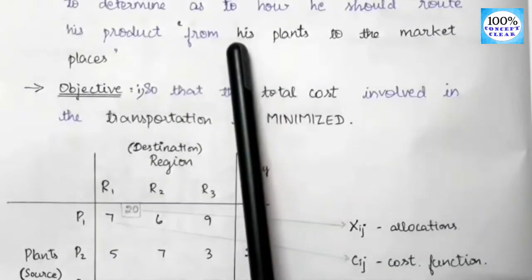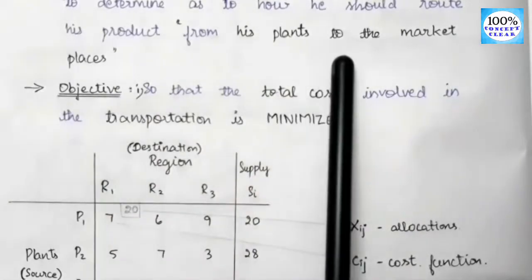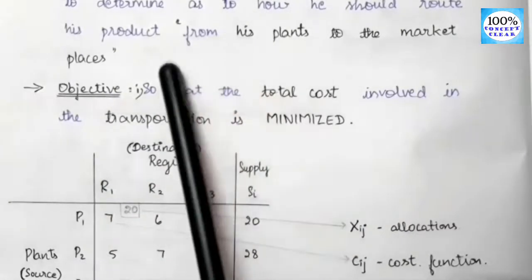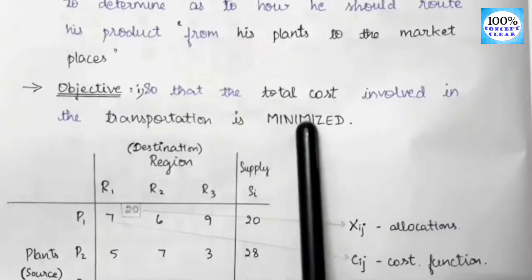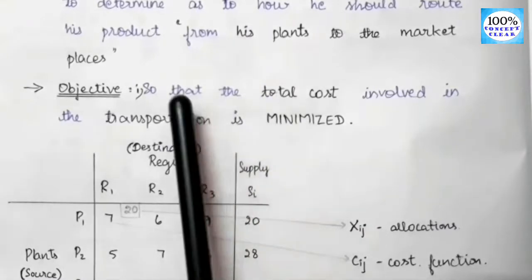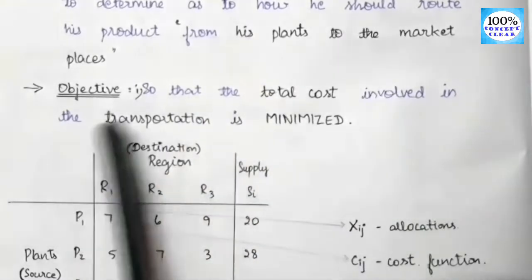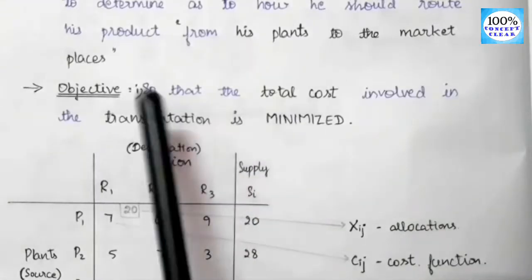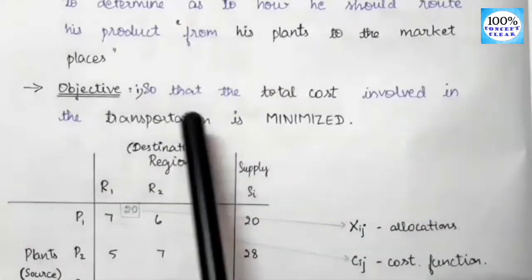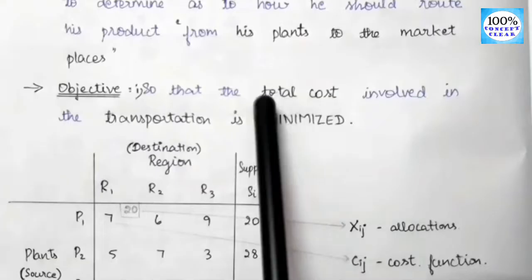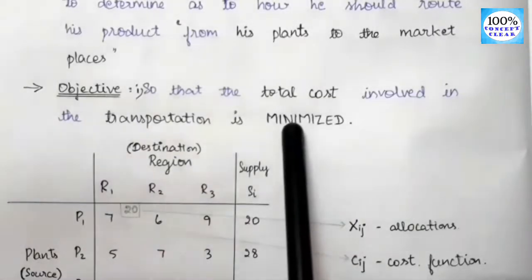The manufacturer's product, from their plant, will be transported to the marketplace. So if you transport, you will have a minimum cost. That is the first objective — that the total cost involved in the transportation is minimized.